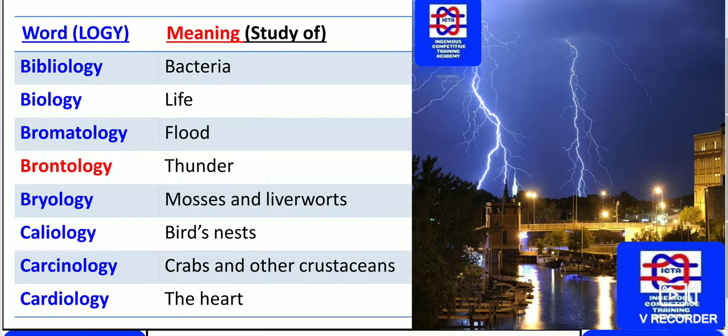Please remember, the pictures given are very important — previously asked questions, so don't miss them. Brontology means the study of thunder. The study of mosses and liverworts is known as bryology.